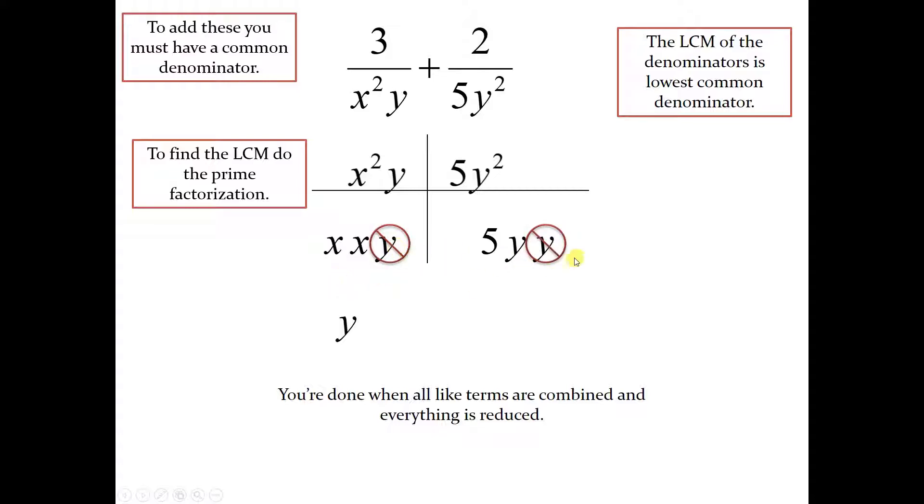Y is the factor that is contained in both sets of factors, and then we go ahead and add the leftovers. So what we have is y times x times x times 5 times y. This is our lowest common multiple. Multiplying this all together, this is the smallest thing that both of these go into. That's going to be our common denominator.